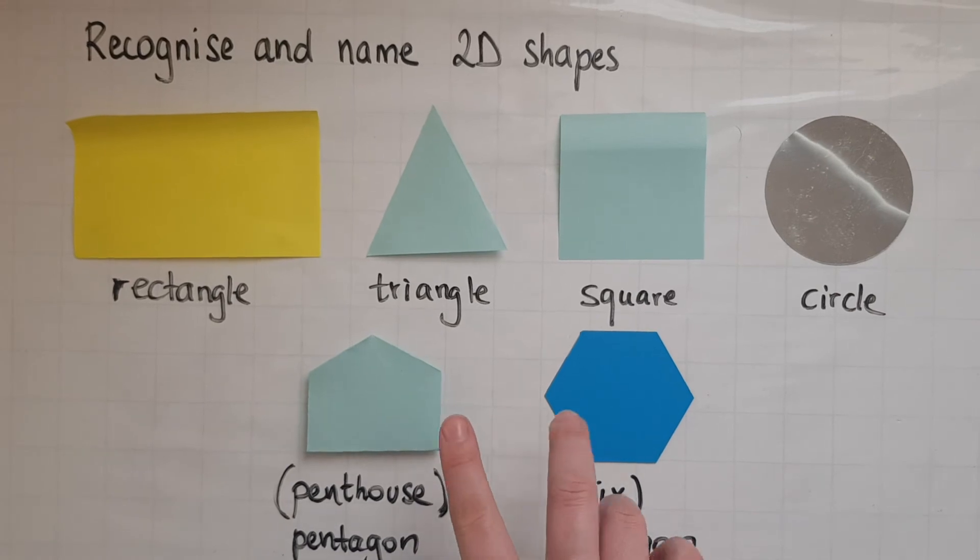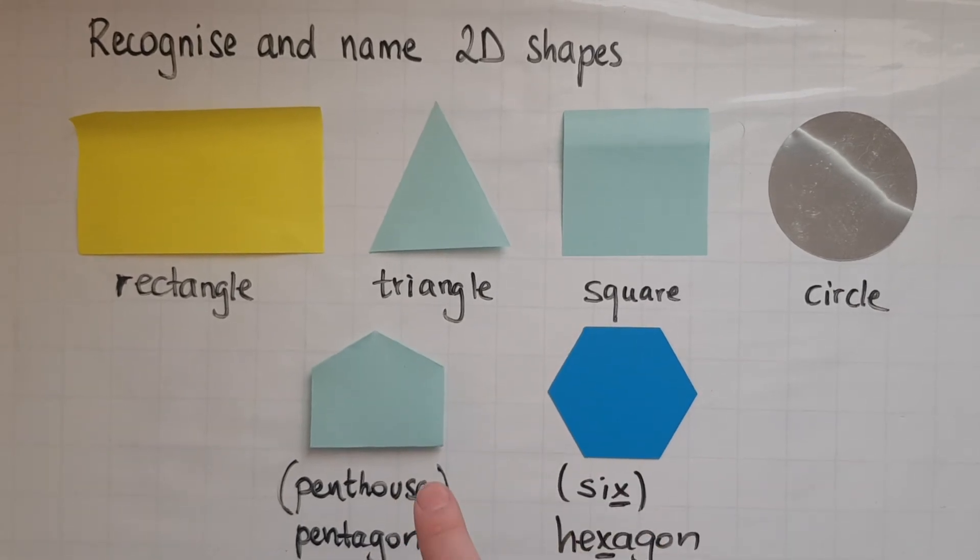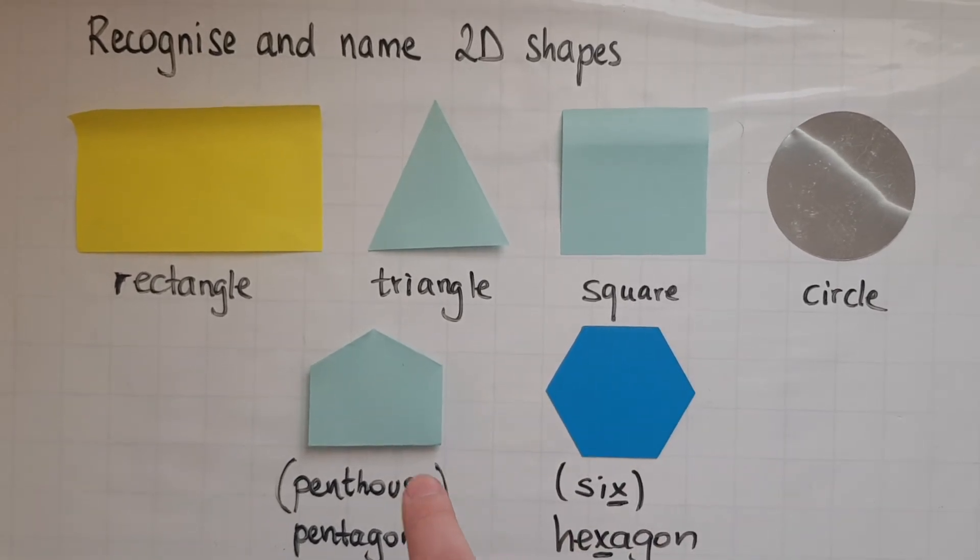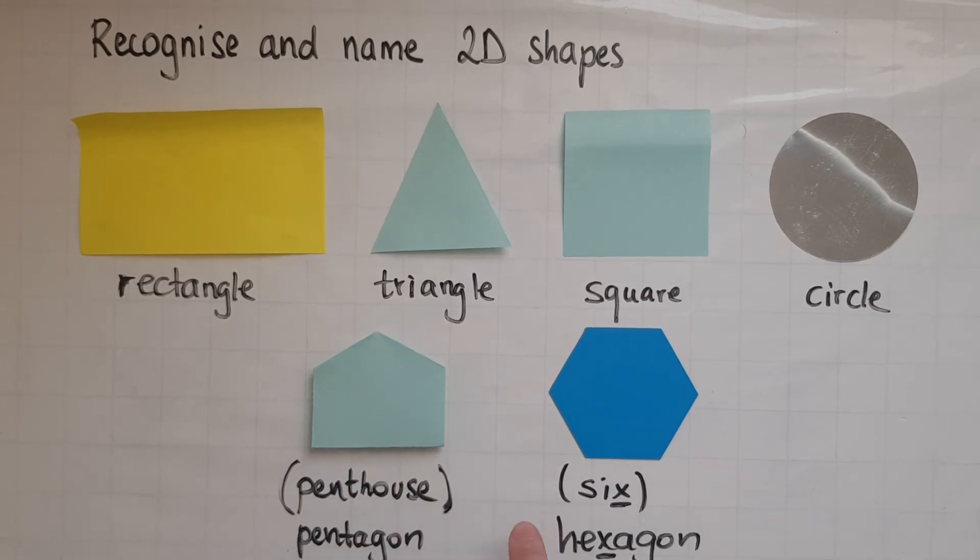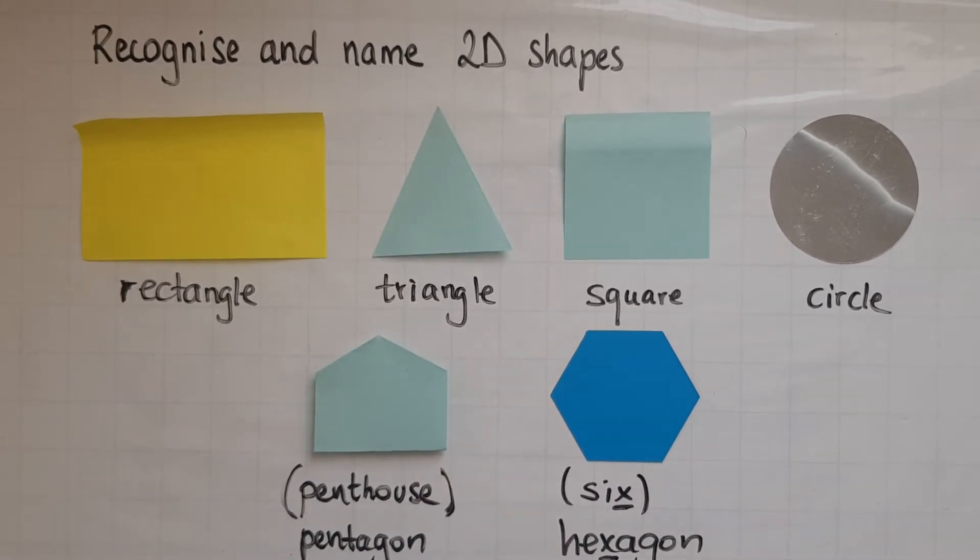So, these are the two extra 2D shapes that you need to remember. You need to recognise and name at entry two.